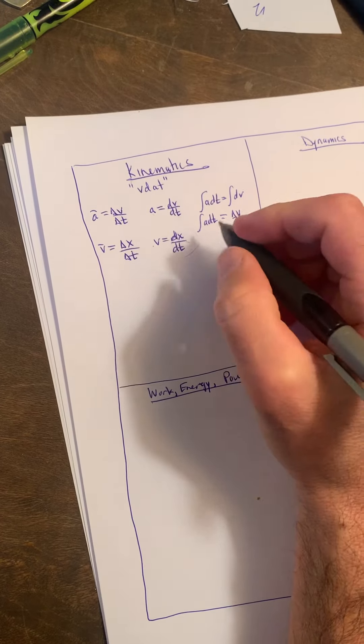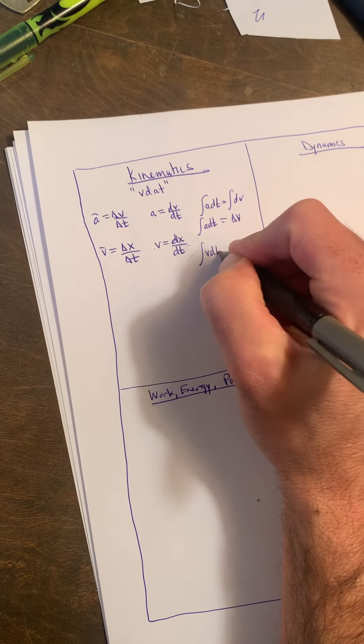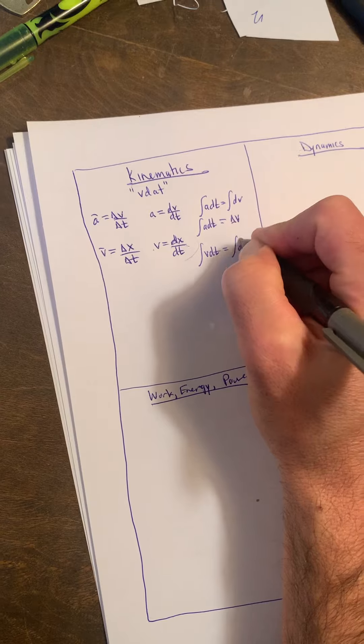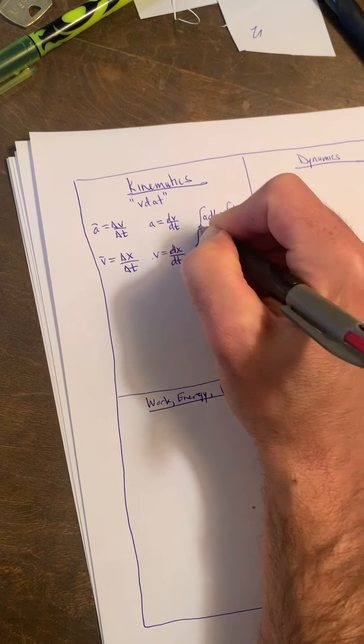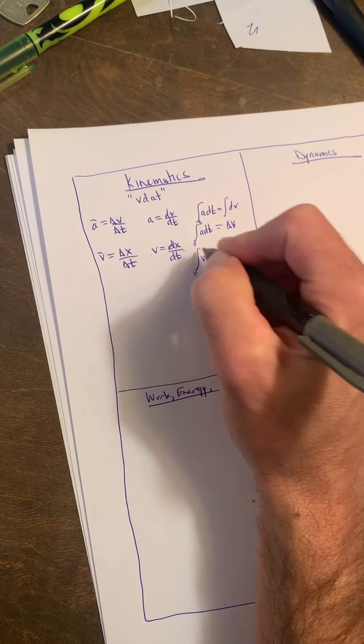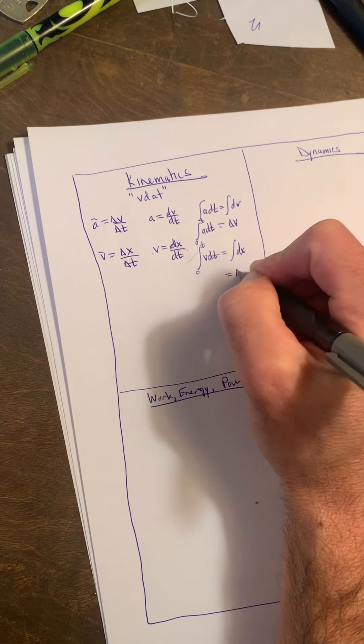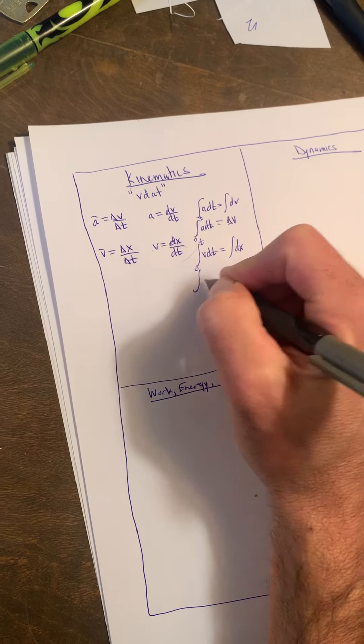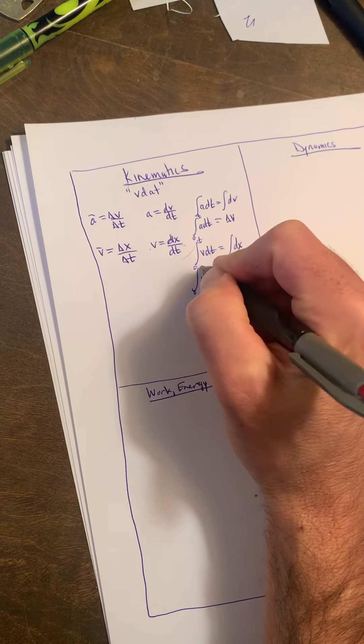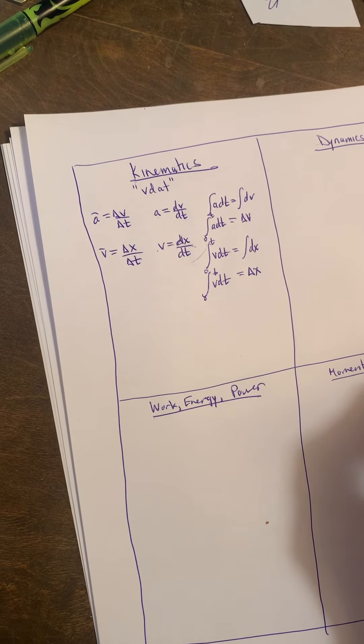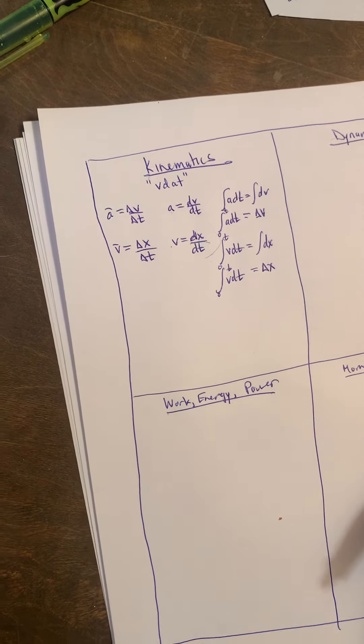And of course you can do that with this one too, so v dt, you know dx, these are from time to time, so zero to time, and so your change in position will just be this integral of v dt.